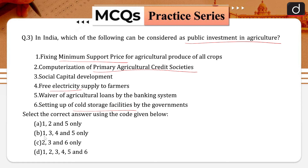Select the correct answer: 1, 2 and 5 only; 1, 3, 4 and 5 only; 2, 3 and 6 only; or 1, 2, 3, 4, 5 and 6 only. Correct answer is option C, that is 2, 3 and 6.